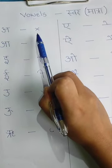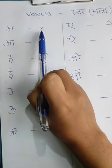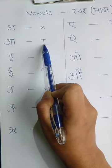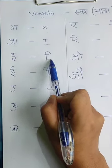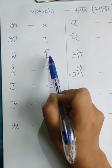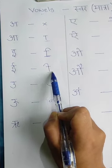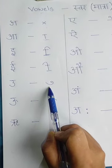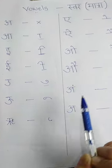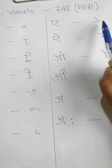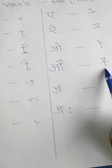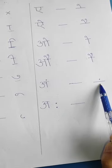So now the signs — A does not have any sign. This is the sign of A. This is the sign of Chhoti I — Chhoti means small. This is the sign of Bari I. Chhota U. Bara U. Ri. This is the sign of E. And this is the sign of AI. O, Aaw, Aung, A.